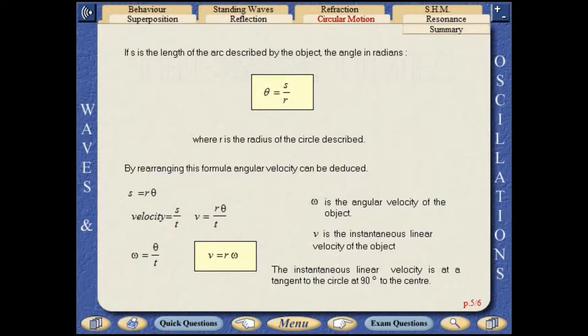The instantaneous linear velocity is at a tangent to the circle at 90 degrees to the centre.